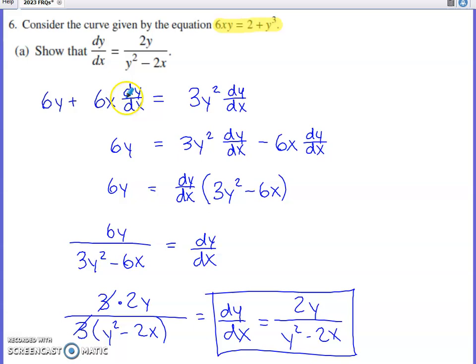In part A, you're asked to show that the derivative of this implicitly defined equation, dy/dx, is this. If you use implicit differentiation, you're assuming Y is a function of X. For the left-hand side, when we do the derivative, we use a product rule. The derivative of 6X is 6 times the original second piece plus the original first piece, and then the derivative of Y with respect to X is our first instance of dy/dx.